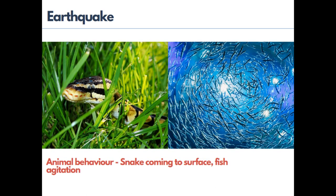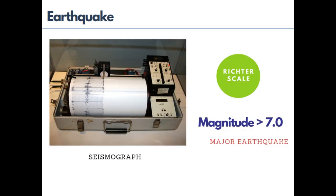Can we predict earthquakes? No, we can't — however, by studying animal behavior we can get some indication. For example, reptiles like snakes come to the surface as they can feel Earth's vibrations before us; likewise, fish in ponds get agitated. We measure earthquakes with a seismograph, which identifies the magnitude — the severity — of the earthquake. It is measured on the Richter scale. When the magnitude is above seven, it is called a major earthquake.